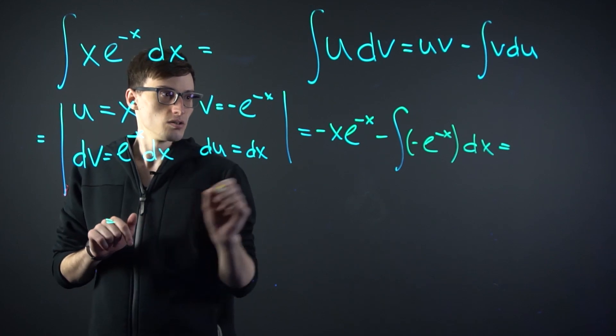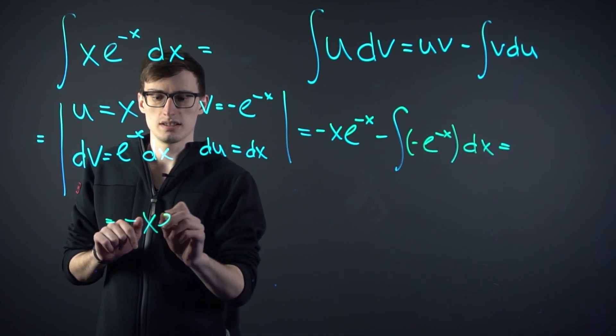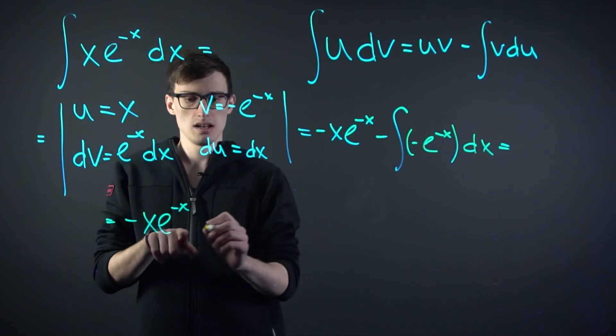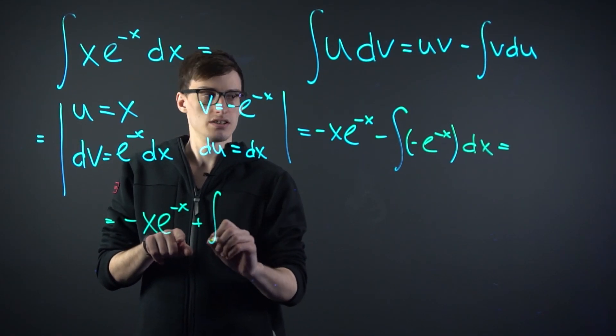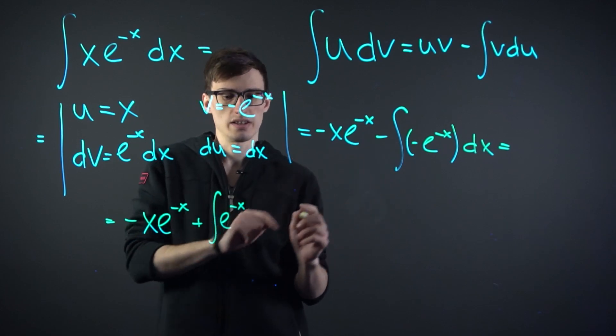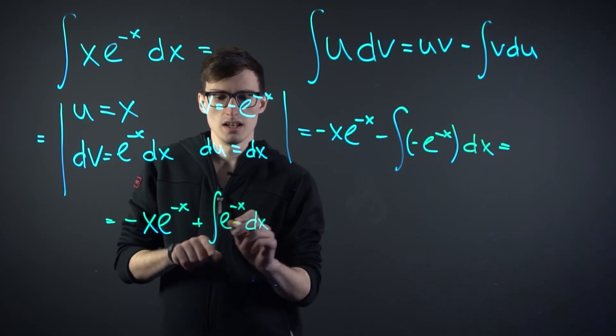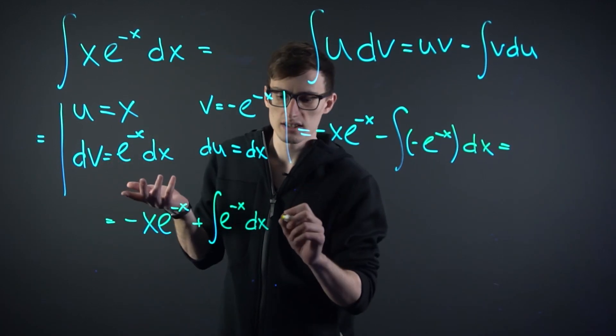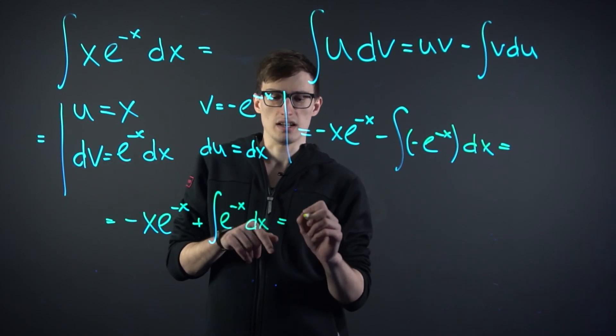So what do we have? We have minus x to the e minus x, plus the integral of e to the minus x, because the minuses here cancel out. And the integral of e to the minus x is obviously minus e to the minus x.